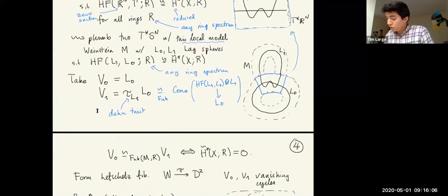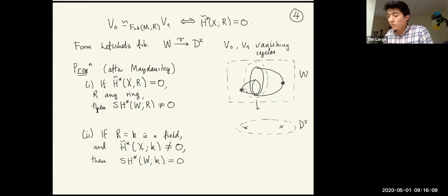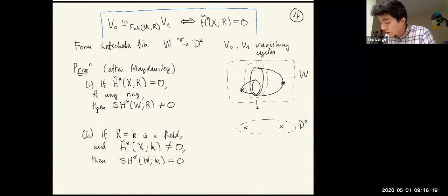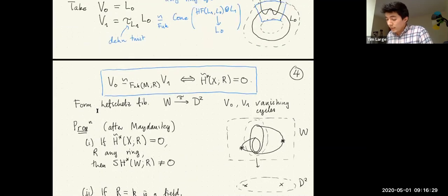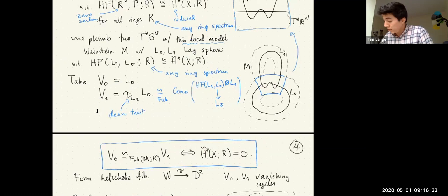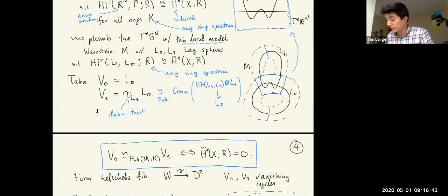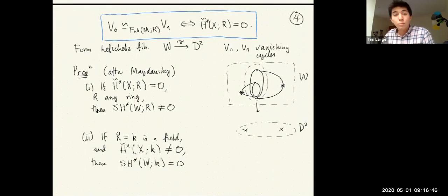We set V0 to be L0 and V1 to be the Dehn twist around L1 of L0. Dehn twists can be computed entirely within the Fukaya category as cones of certain morphisms — specifically, this is the cone of the evaluation map from HF(L1, L0) tensor L1 to L0 in the Fukaya category. The important outcome is that V0 and V1 are isomorphic in the Fukaya category with coefficients in R if and only if the reduced cohomology of X with coefficients in R vanishes.